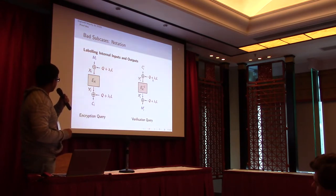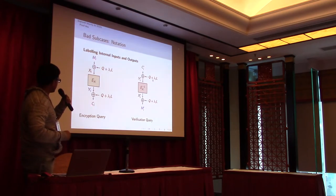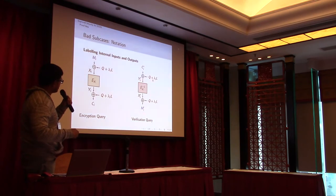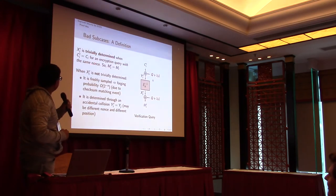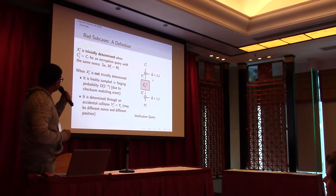So now, since we are going into more details, here we have encryption query with m_i and output is c_i. We say the input to the block cipher is called x_i and output is y_i. In the verification query, we have c_i_prime that goes to m_i_prime, and input to the inverse block cipher is called y_i_prime and output is x_i_prime. Using these notations, we will try to see what the environment looks like. These x_i_prime are trivially determined when c_i_prime is c_i for encryption query with same nonce, so in that case m_i_prime is m_i, because that means basically this block cipher call has been determined by the previous queries.